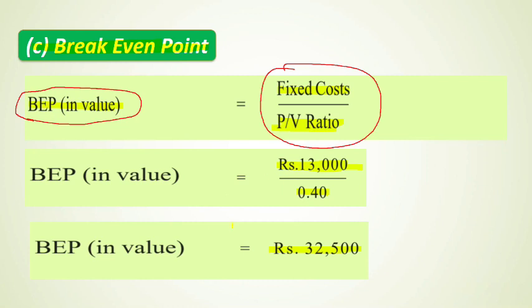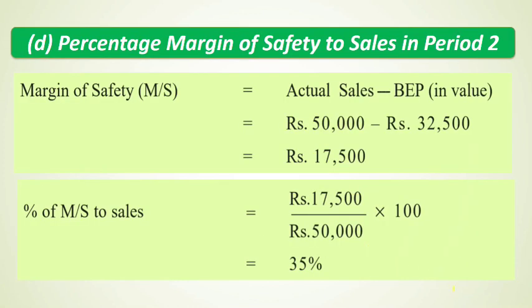The break-even point value is ₹32,500 — remember this value. Now we move to Part D, which is the percentage margin of safety to sales for Period 2. The break-even point value helps us calculate the margin of safety.